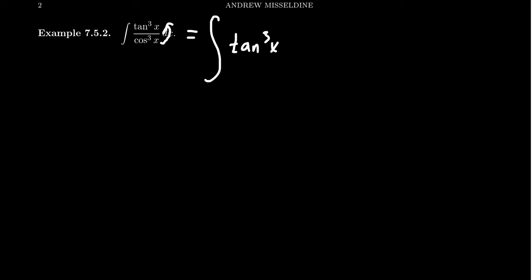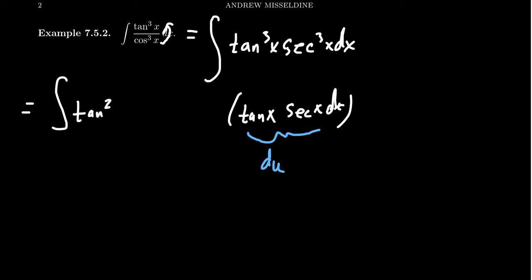Since we have tan³(x) and sec³(x), I'm going to pull aside tan(x)sec(x)dx. I want to set this aside because this is going to be my du for a substitution. That leaves behind tan²(x) and sec²(x). Now secant is what I want to be my u, because its derivative is tan(x)sec(x). If you're going to do that, you don't want tan²(x). Instead,